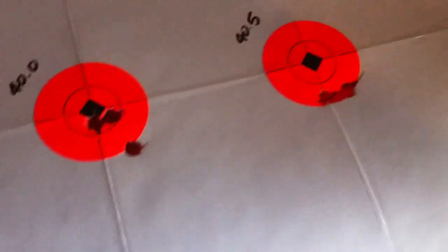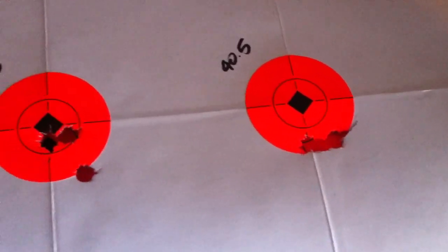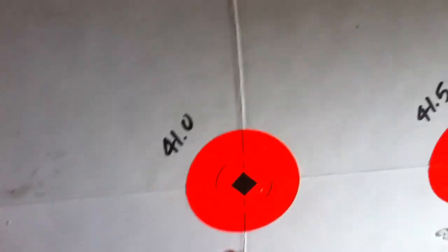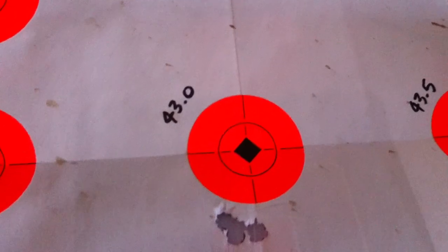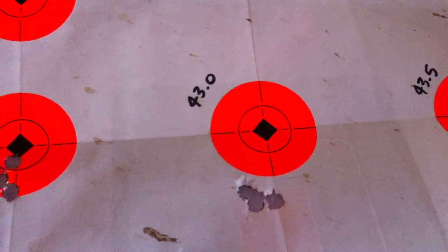So for benchmark, I'll probably be using between 40.5 and 41 with 168 grain Sierra Match King. And for IMR 4064, I'll be using 43 grains of IMR 4064 behind 168 grain Sierra Match King.